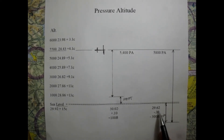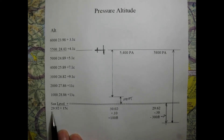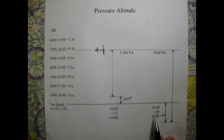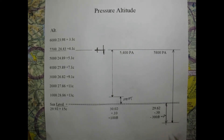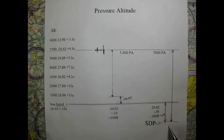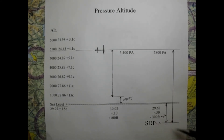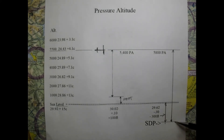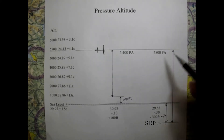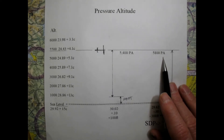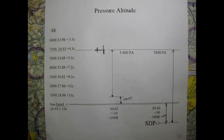Now let's look at a low pressure scenario. We take 29.62 and subtract it from 29.92, which gives us negative 0.30 inches - that equates to 300 feet. Since you cannot have higher pressure above lower pressure, this brings our standard datum plane down 300 feet. Measuring from that standard datum plane up to our 5,500 feet true altitude gives us a pressure altitude of 5,800 feet.